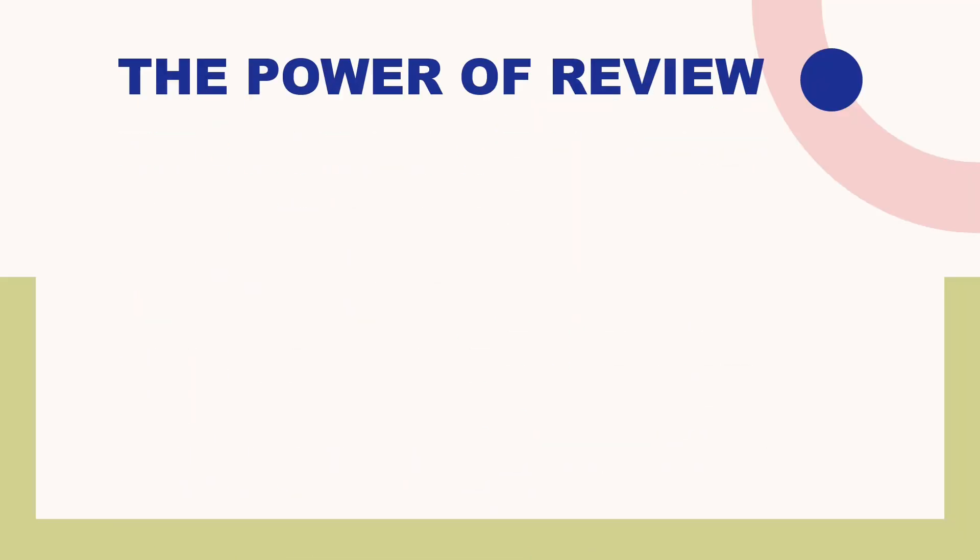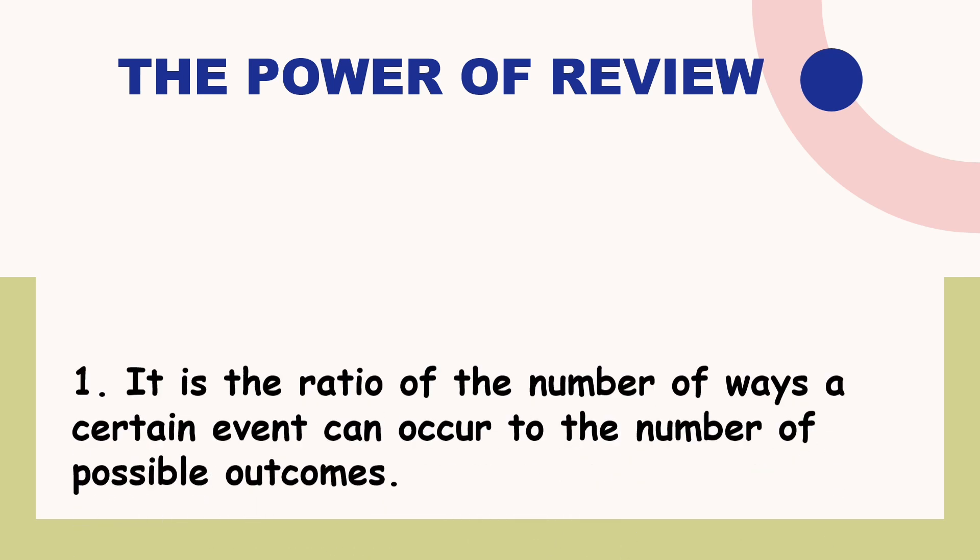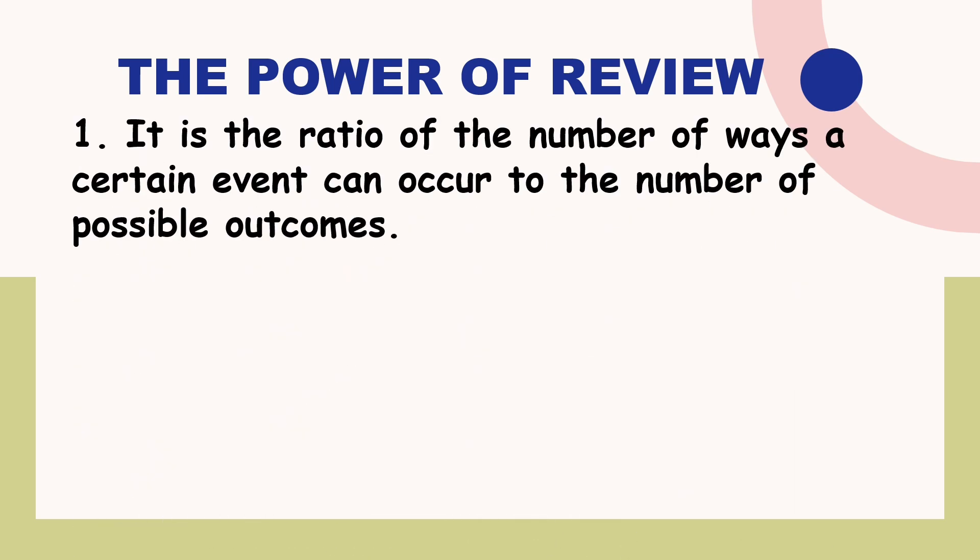So let us start first with a review of our lessons by answering the following questions. Number one question: it is the ratio of the number of ways a certain event can occur to the number of possible outcomes. Is it A. Permutation?